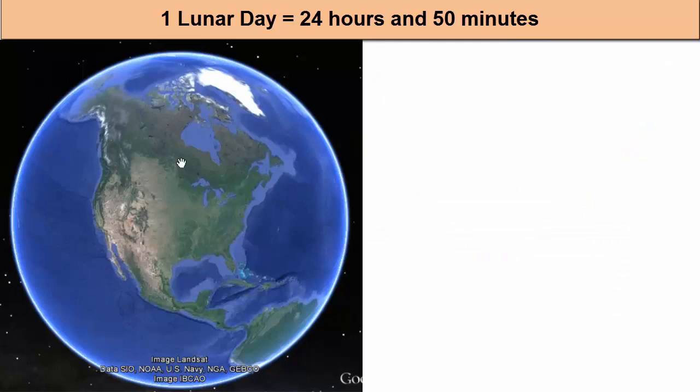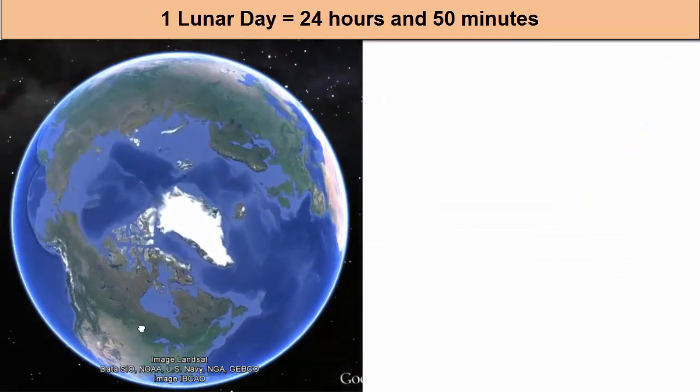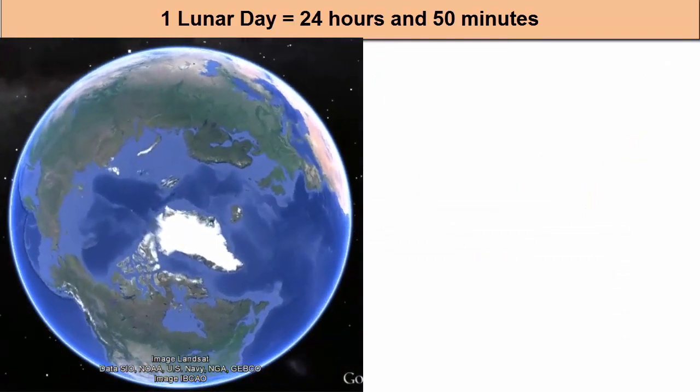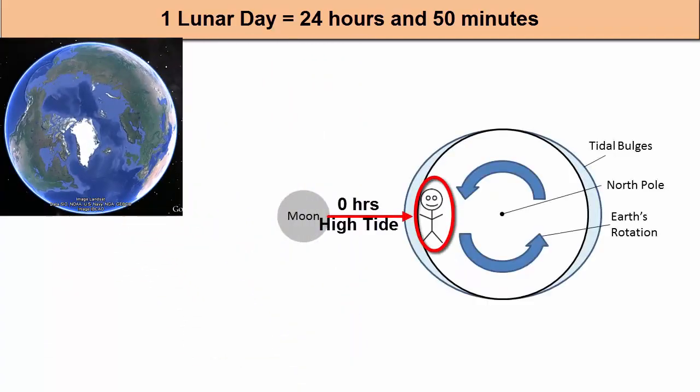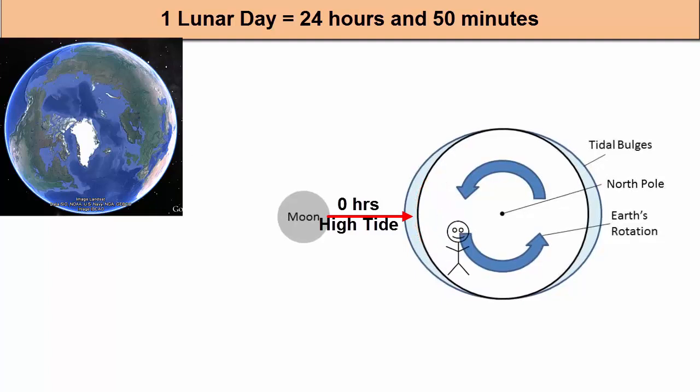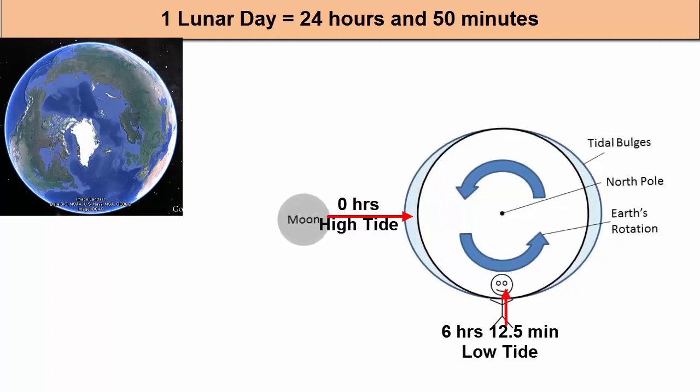This picture shows the Earth's rotation from the point of view of the North Star Polaris looking down. Notice the stick figure that is starting under one of the bulges, experiencing high tide on the side of the Earth facing the Moon.